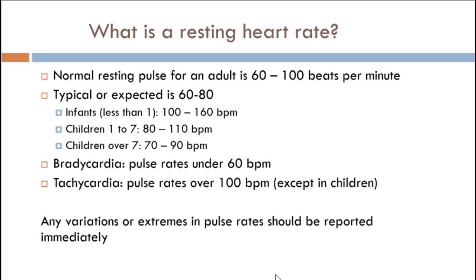The normal resting pulse for an adult is 60 to 100 beats per minute. Anything below 60 or over 100 warrants investigation — but remember, this is resting heart rate, at total rest. You will regularly get your heart above 100 beats per minute with any daily activity like a short walk or a flight of stairs. The expected range is 60 to 80 — if you measured 100 people, about 90% would fall in that range. Infants have a higher heart rate, just like they have a higher breathing rate, and as we get older the heart slows down.